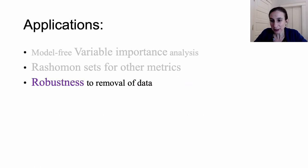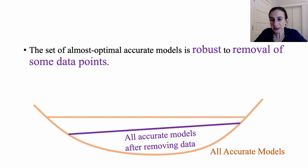And then the third application is robustness to the removal of data. And here we show that if we remove some data points, the new Rashomon set is contained in the original data's Rashomon set for a slightly higher threshold.